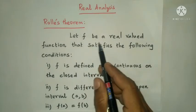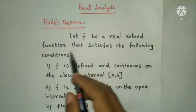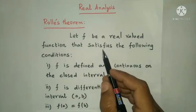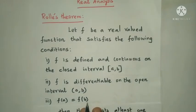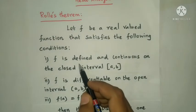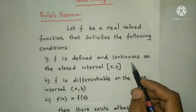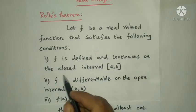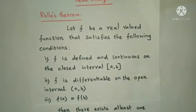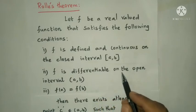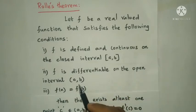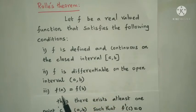Let f be a real valued function that satisfies the following conditions. First condition: f is defined and continuous on the closed interval [a, b]. Second condition: f is differentiable on the open interval (a, b). Third condition: f(a) equals f(b).